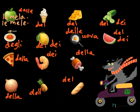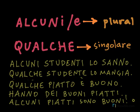So these would be the partitive articles in Italian. I hope it was clear. I hope you can use them now, and I hope you also refreshed your memory with the definite articles in Italian and some food vocabulary.